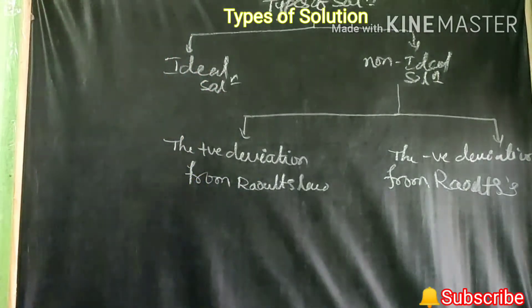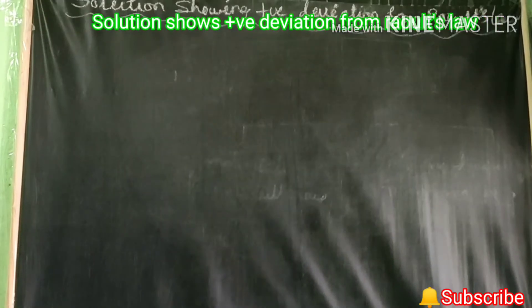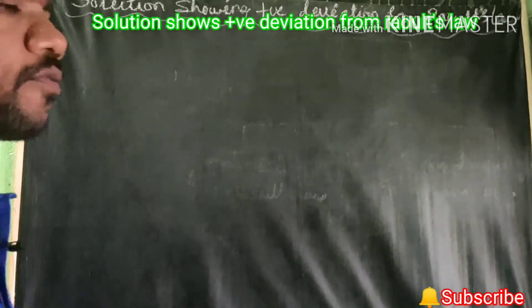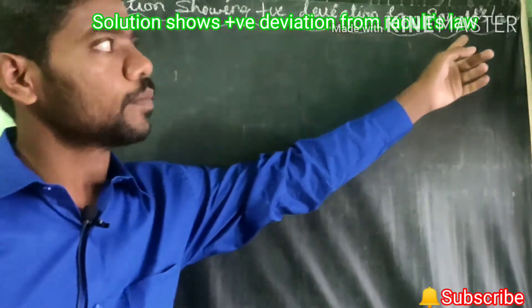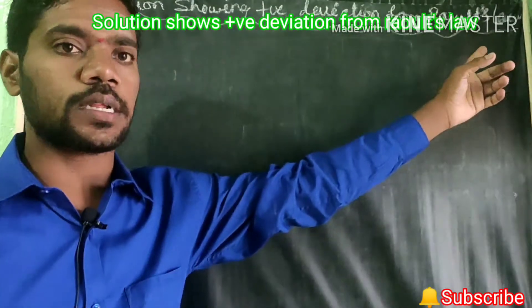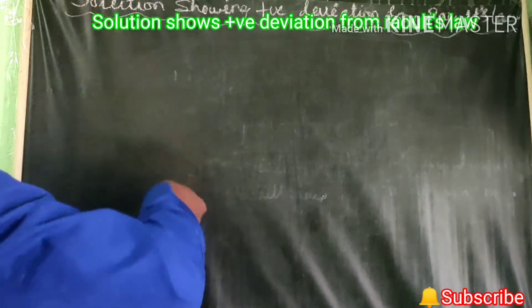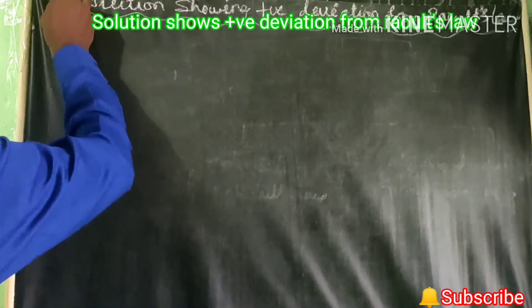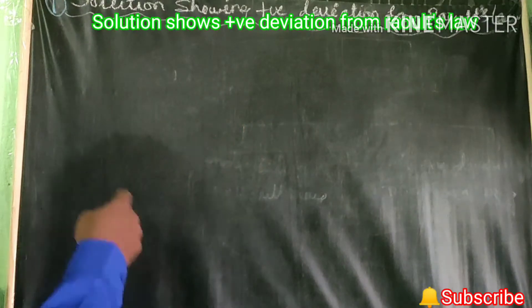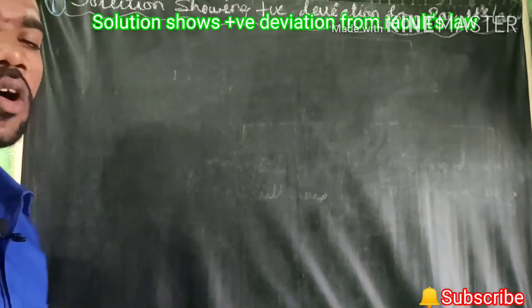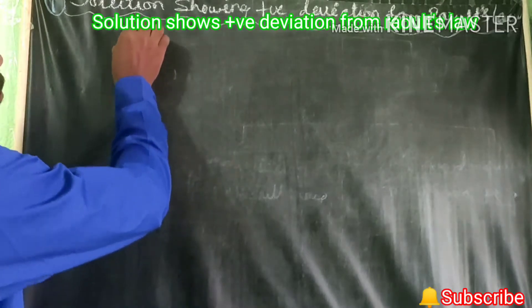Okay, we are going further. Now, solution showing positive deviation from Raoult's law — this is the first type of the non-ideal solution. We have classified it into two types: solution showing positive deviation and solution showing negative deviation from Raoult's law. First, we go for the definition.